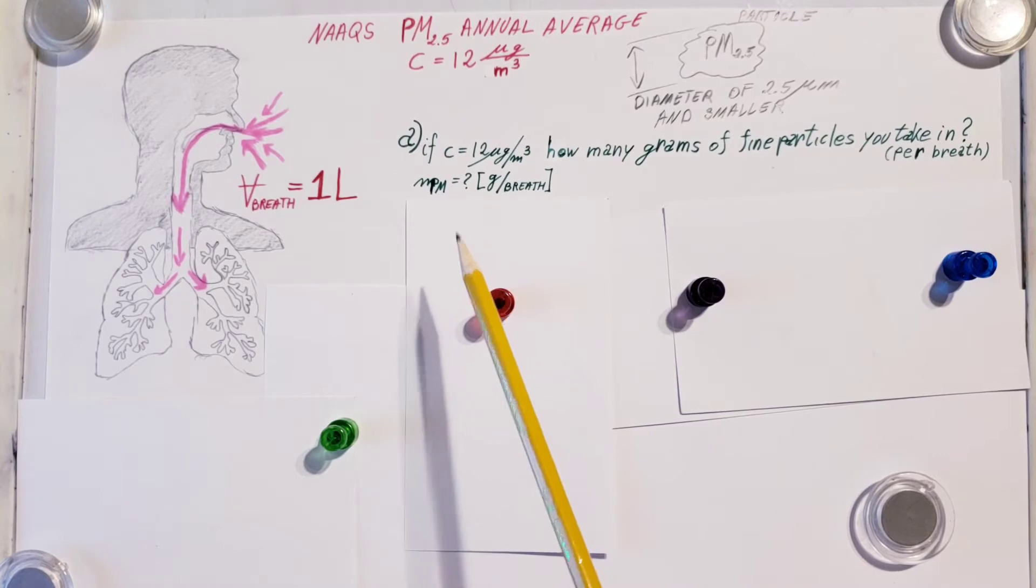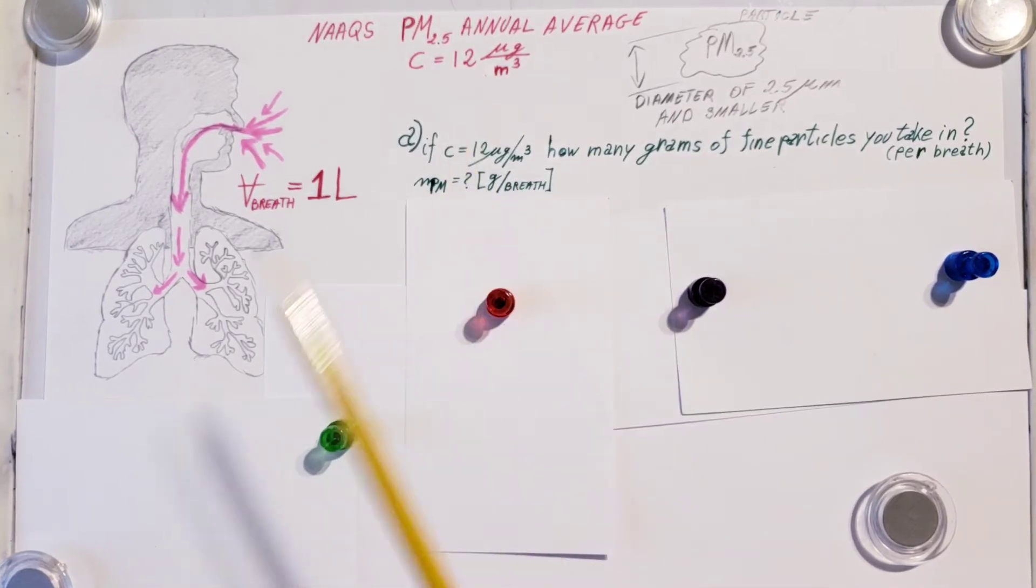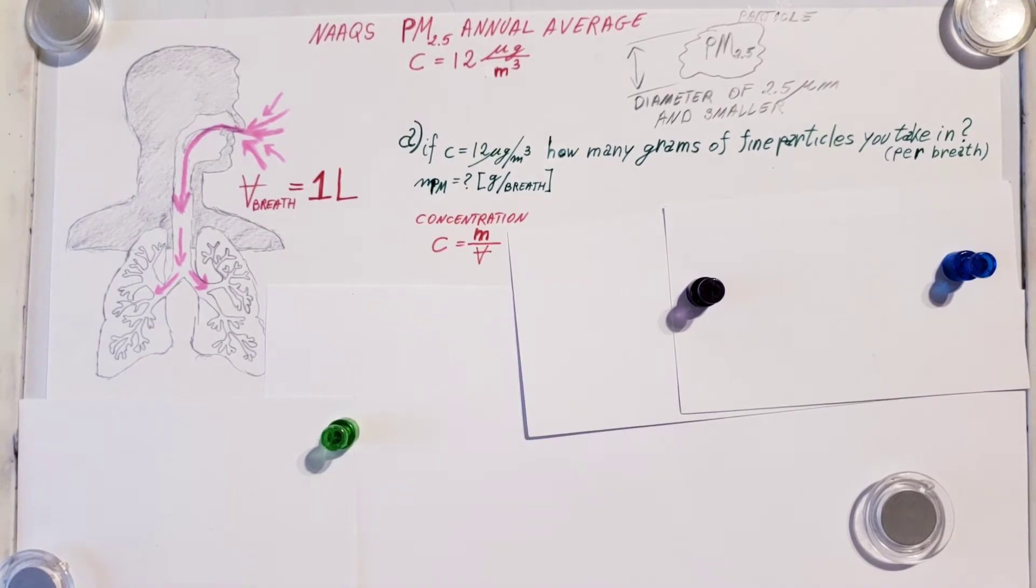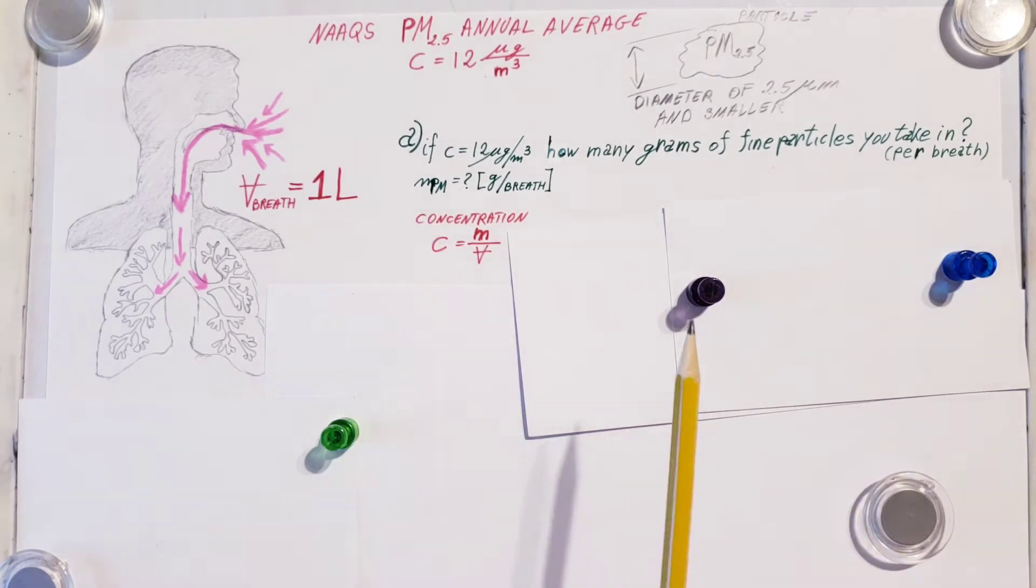Okay, the first question: how many grams of particles do we take in in one breath? For this we're going to rely on the concentration formula, which is a similar idea or concept to density—mass over volume.